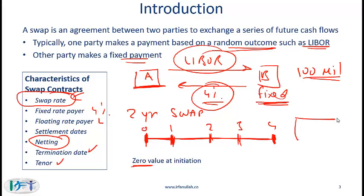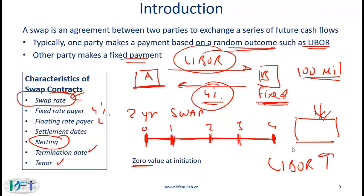As with other derivative contracts, the swap is a contract between A and B. Let's say that interest rates start going up more than expected — then clearly the party receiving the floating payment of LIBOR is benefiting. So the value of the contract is then positive for party B and negative for party A.